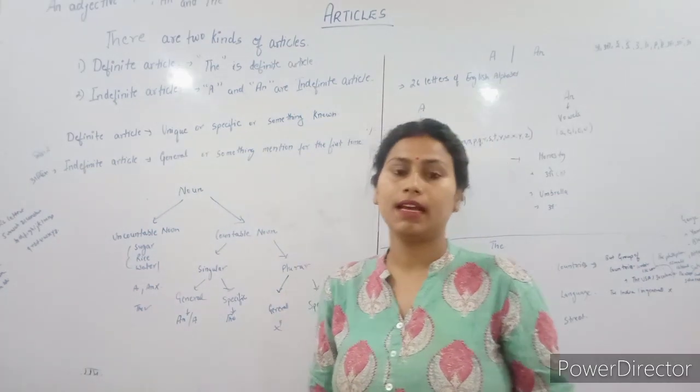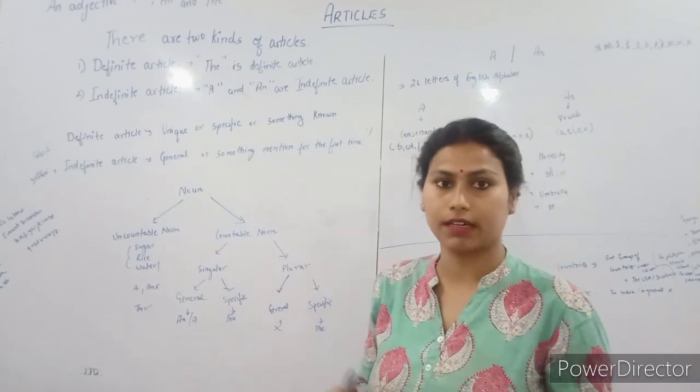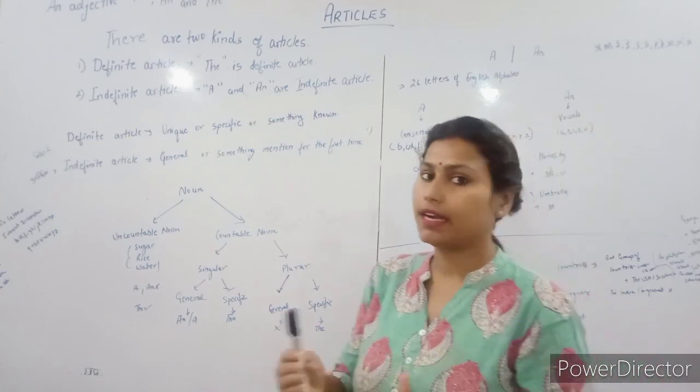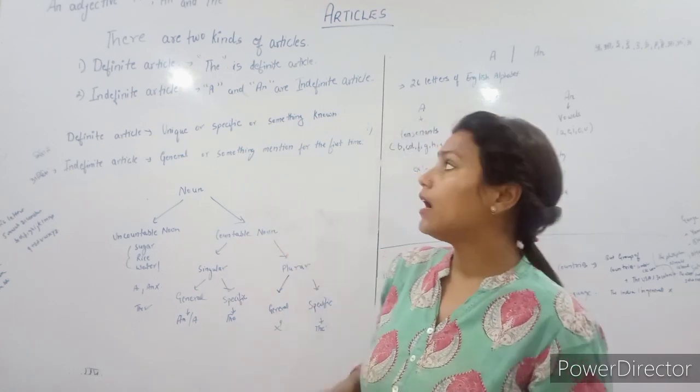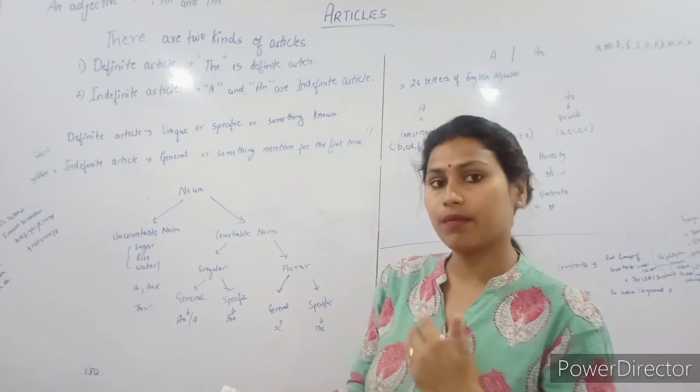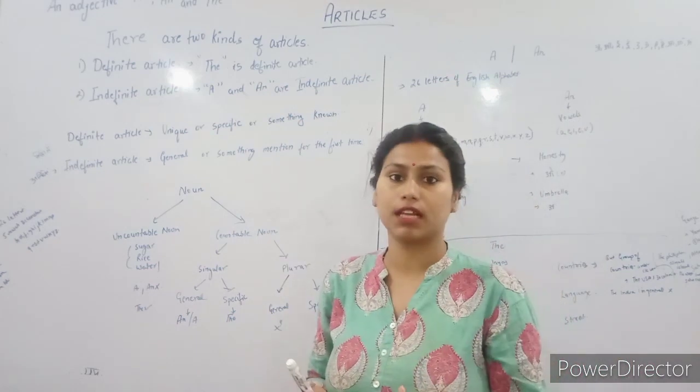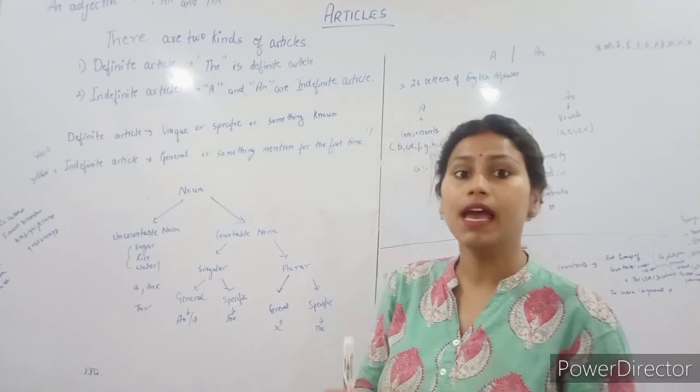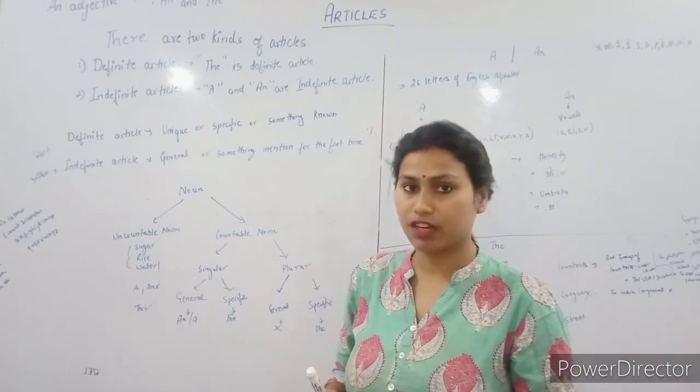Our adjectives a and the are our articles. There are two types: definite article and indefinite article. The definite article is used for things that are unique and specific, that we know. The indefinite article is for things we don't know about or are unspecific.